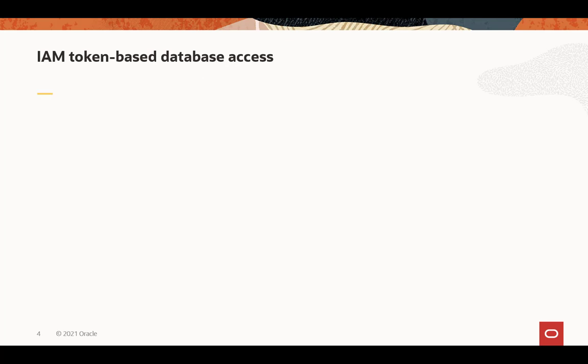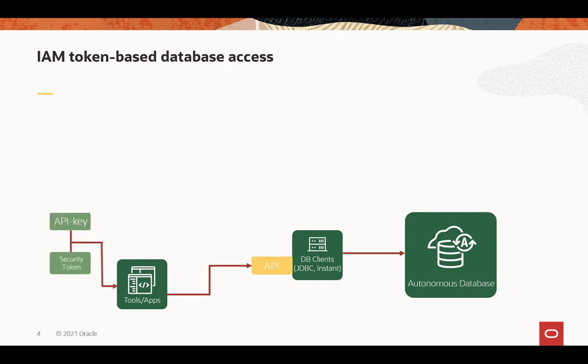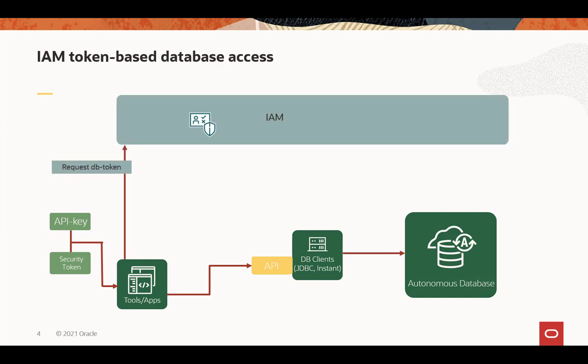The second mechanism is token-based access to the database. Again, the Autonomous Database is configured for IAM. Because these tokens are being passed through the API or file system to the database clients, you have to use the most up-to-date clients pulled down from the website. Tools and applications can be configured and updated to use the OCI public SDK to take existing credentials from the user, like an API key or security token, and request the DB token for the user from IAM.